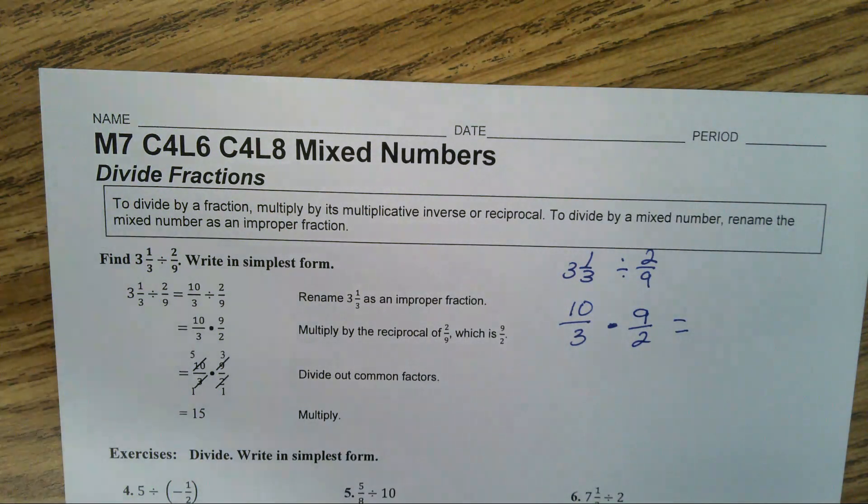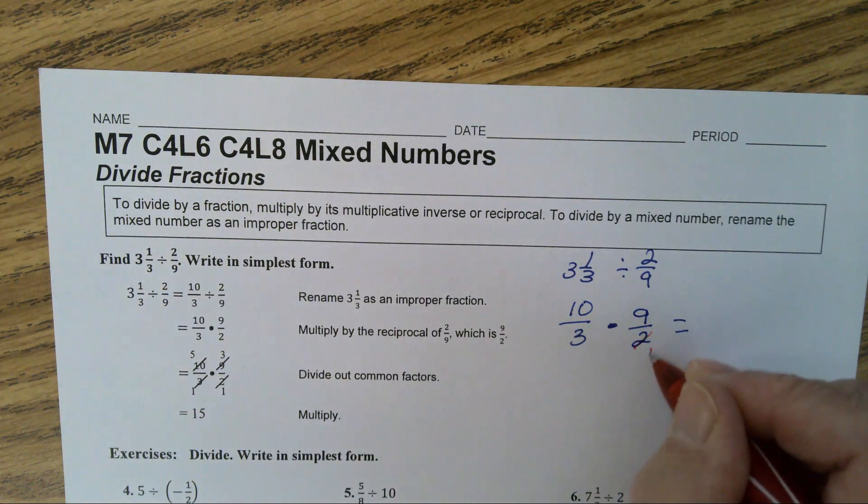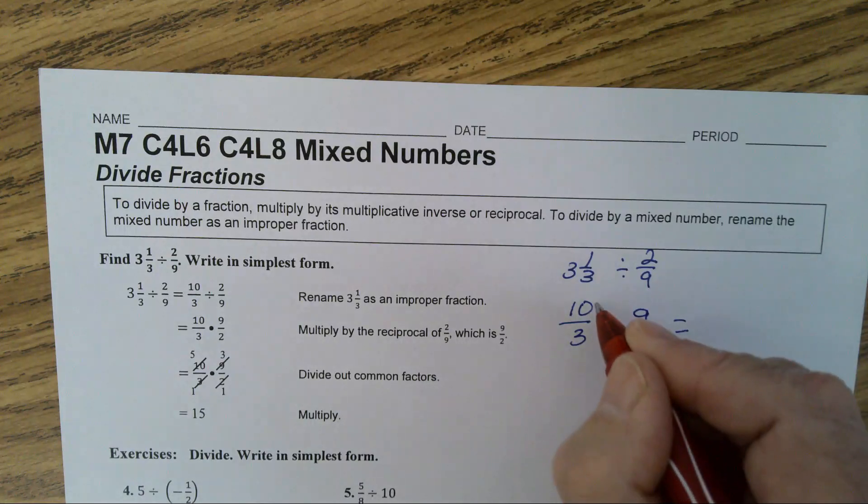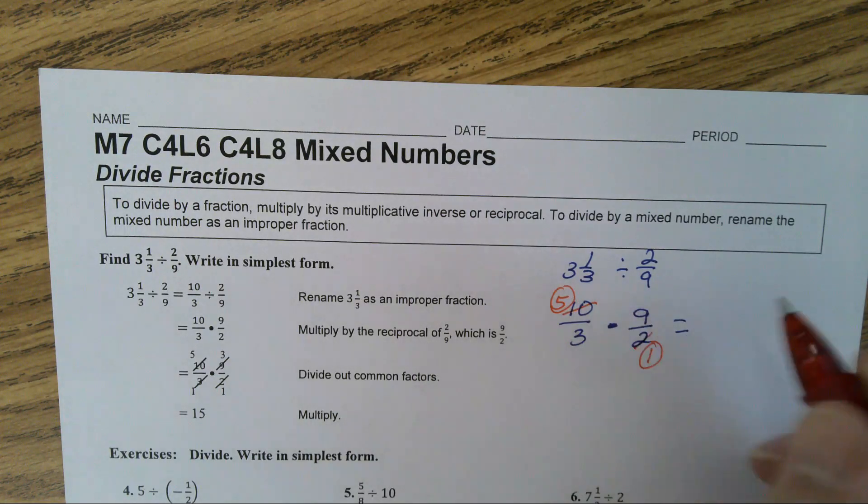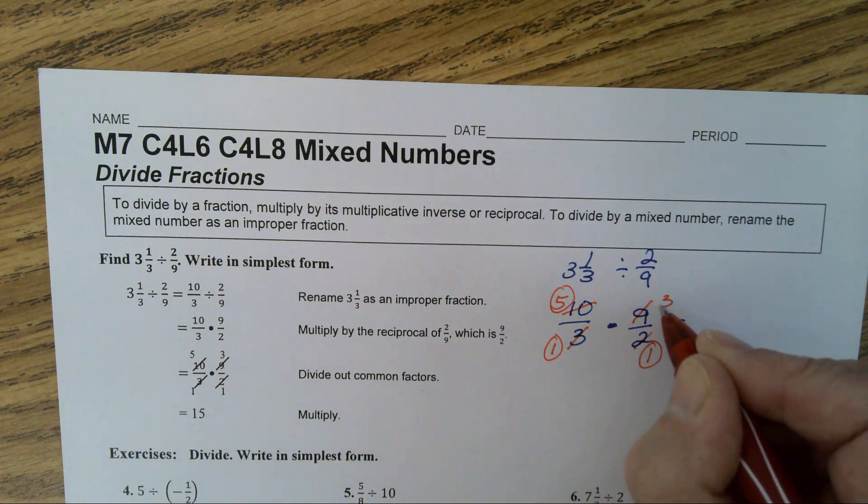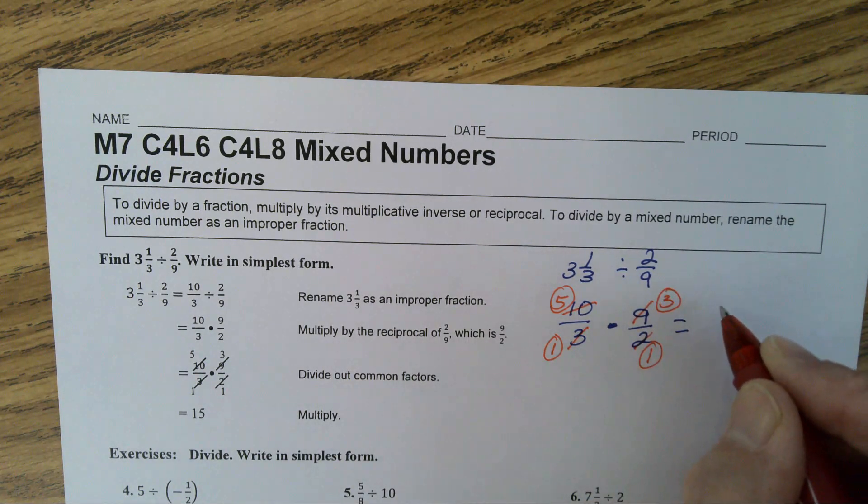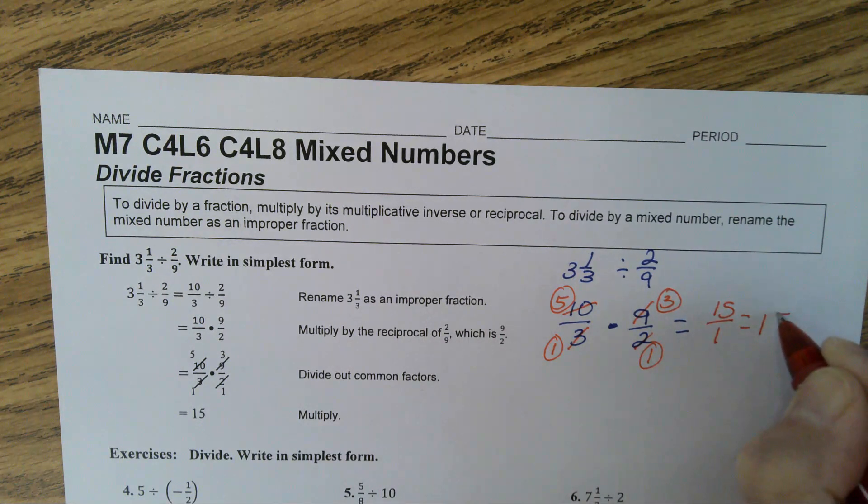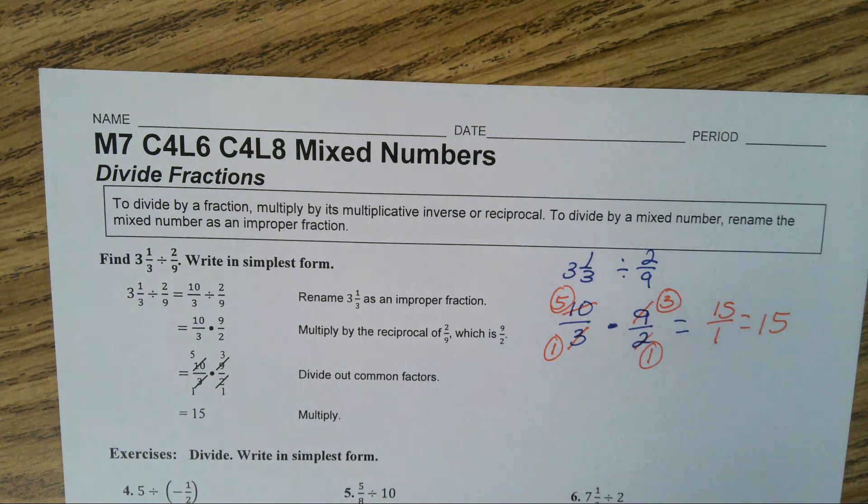Simplify before you multiply. 2 divides 2 once. 2 divides 10 five times. 3 and 9. 3 will divide 3 once. And 3 divides 9 three times. You end up with 15 over 1, which gives you the final answer of 15.